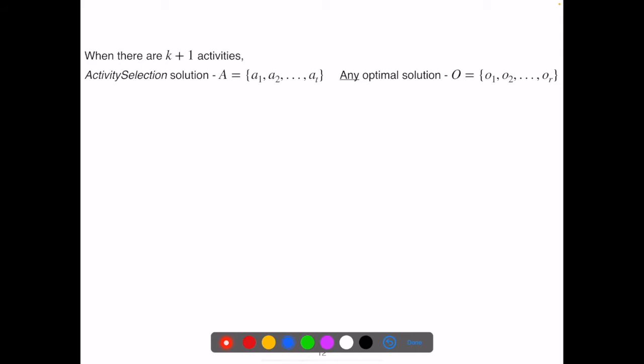When there are k plus 1 activities to choose from, our greedy algorithm provides a solution A that picks activities a1, a2, at. Now we need to prove that A is optimal. Again, we assume there is an optimal solution O that picks activities o1, o2, or. r should be no less than t. Similar to the proof for the road trip problem, we take two steps.